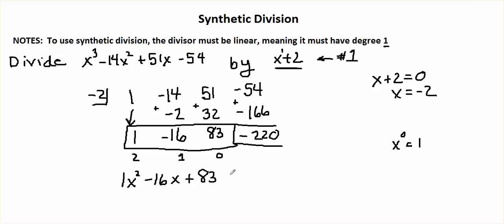And then our remainder is negative 220, and we know what we do with our remainder: we write it in fraction form, negative 220 over our divisor x plus 2. And there we go, that is how you divide using synthetic division. Remember, our divisor must be linear to be able to use synthetic division.